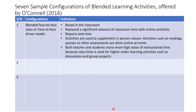The indicators when using this model: it is based in the classroom, and replaces a significant amount of classroom time with online activities, requiring sit time. Activities are used to supplement in-person classes; activities such as readings, quizzes, or other assessments are done online at home. Both teacher and students share more high-value instructional time because class time is used for higher-order learning activities such as discussion and group projects.